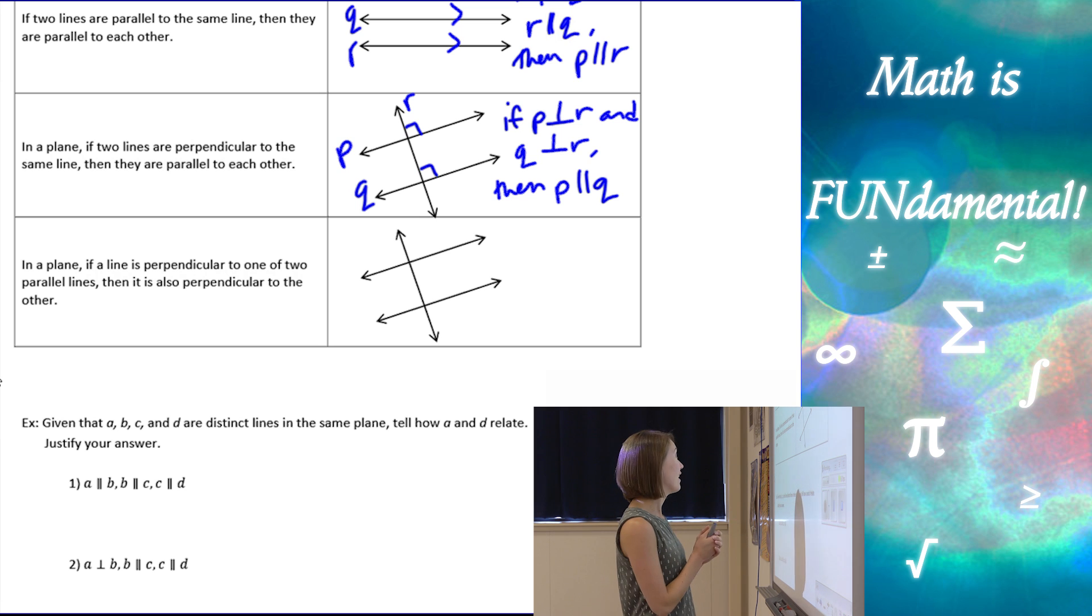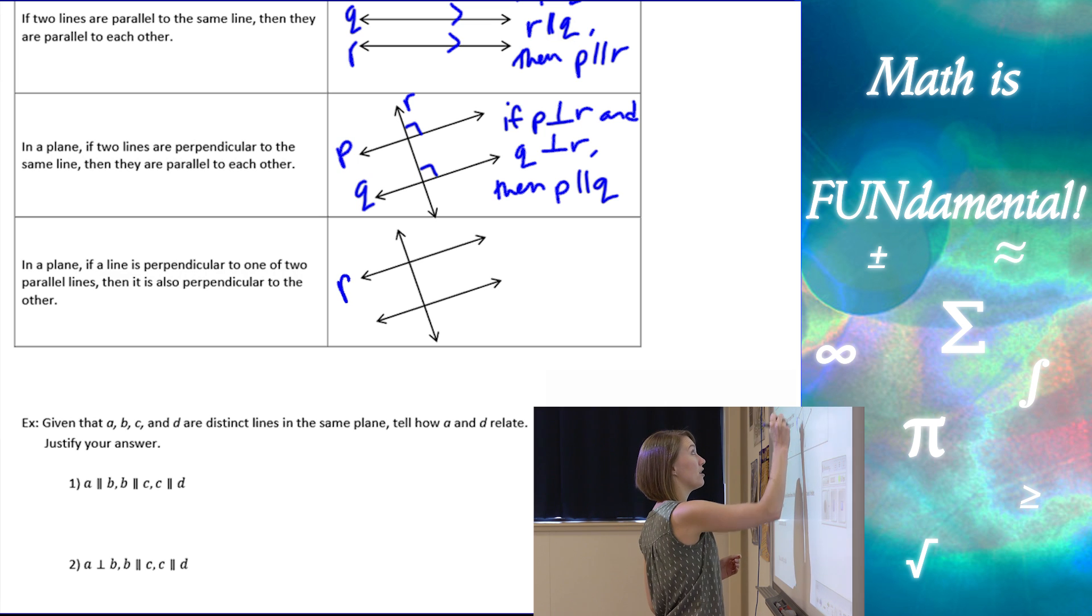All right, last, third one. In a plane, if a line is perpendicular to one of two parallel lines, then it's also perpendicular to the other. So, what we have here is slightly different than the last one. Looks kind of the same, but this time our given information is that one line is perpendicular to one of two parallel lines.